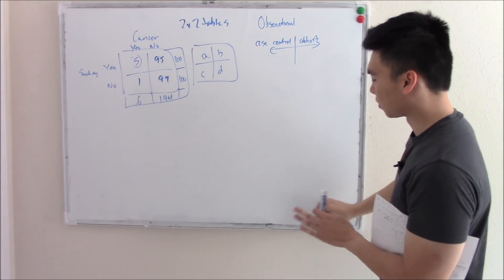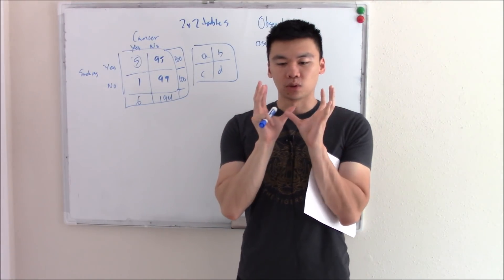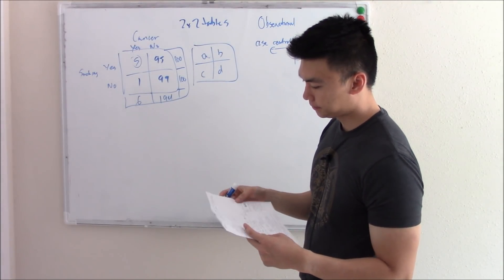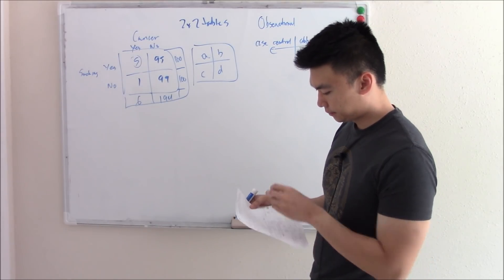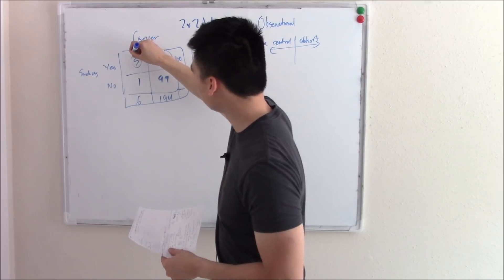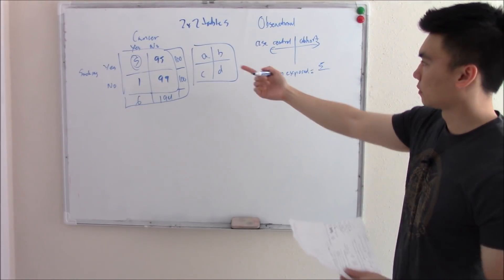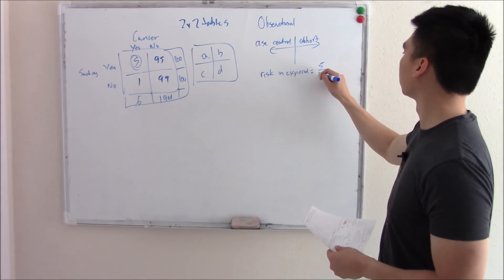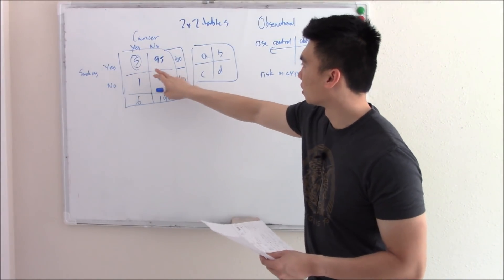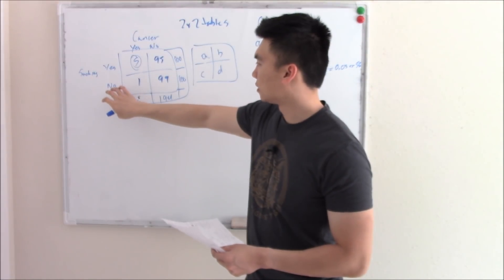Next, let's talk about cohort studies. In cohort studies, you take a group of people that have risk factors and follow them through the years to see if they develop the disease. So we look at people exposed to smoking and see how many developed disease — that's 5 people out of 100 smokers, giving us 5/100 or 0.05 (5%). The generic formula for that is A over A plus B.